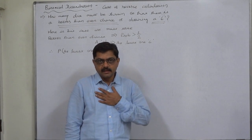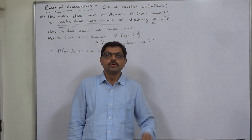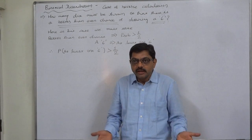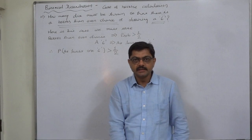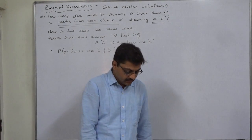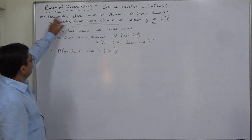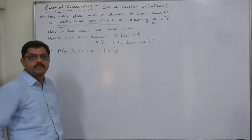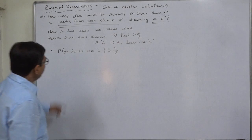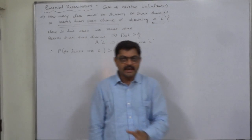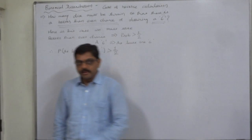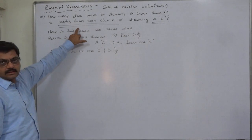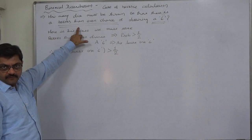I personally believe that any paper setter should not use these types of strange or ambiguous terms in a question, but since they were used, that is why I am commenting on them. The problem is: how many dice must be thrown so that there is a better than even chance of obtaining a 6? The term 'better than even chance' is not at all a statistics term. To solve the problem, we first have to take the statistical interpretation of this term.